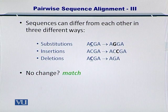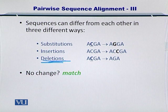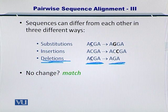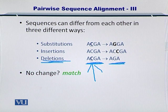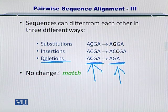Now let's take a look at deletions. In the case of deletions, if you have a sequence ACGA and you're comparing it with another sequence AGA, you can clearly see that the C — cytosine — has been deleted from this sequence.